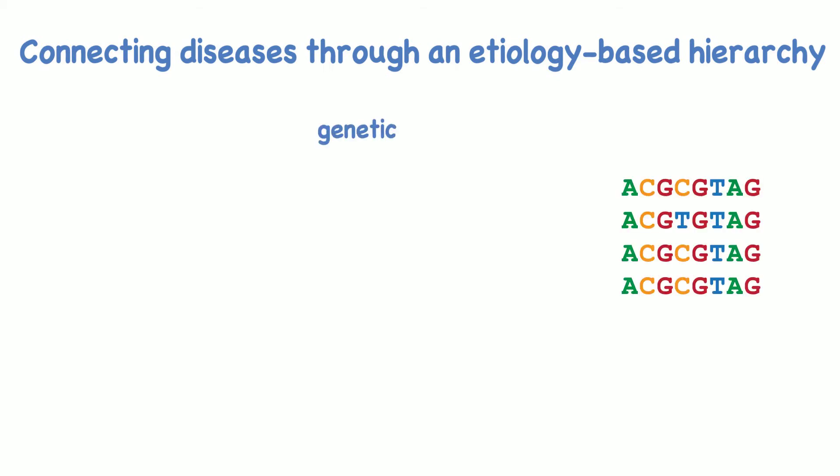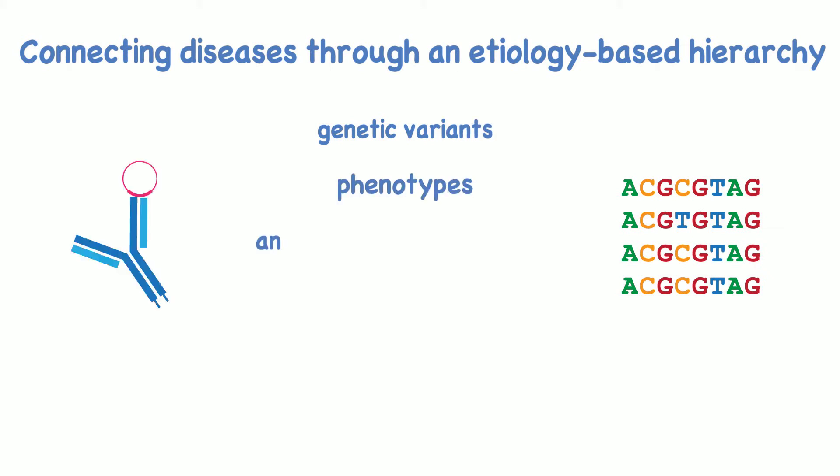The Human Disease Ontology connects diseases through an etiology-based hierarchy, thus enabling clinical resources to view genetic variants, phenotypes, antibodies, and T-cell epitopes across related diseases.